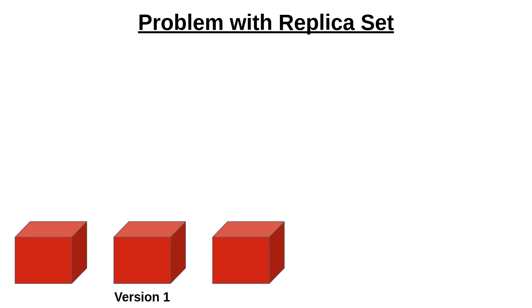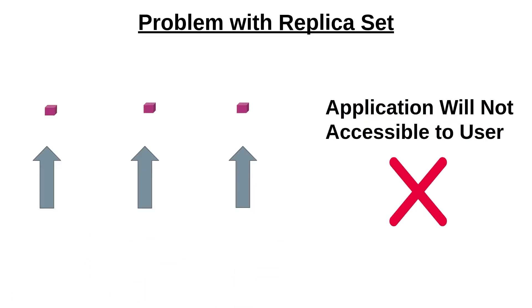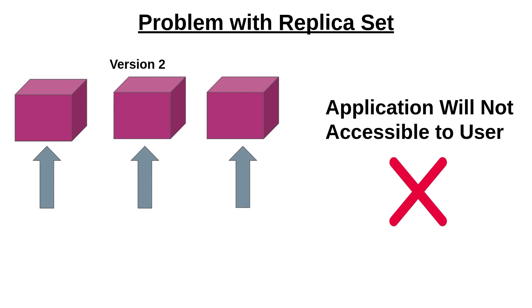So our first topic is: problems with ReplicaSet. Let's suppose that we have three pods for one application which is on version 1 and we want to update this application to version 2. ReplicaSet deletes all the pods first, so when our application's old pods are deleted, our application has downtime and will not be accessible until the new pods are created.